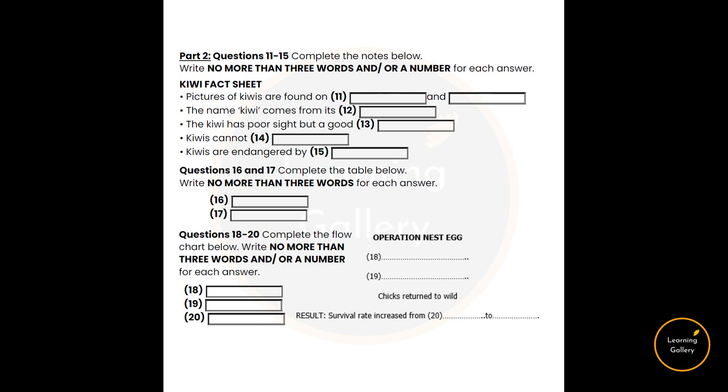Since white settlement of the islands, kiwi numbers have dropped from 12 million to less than 70,000, and our national bird is rapidly becoming an endangered species. This is because they're being threatened by what we call introduced animals. Animals which were brought to New Zealand, such as cats and ferrets, which eat kiwi eggs and their chicks.